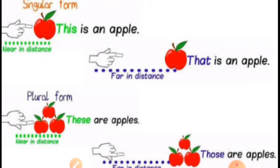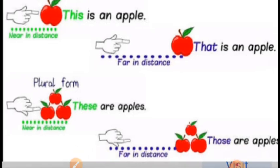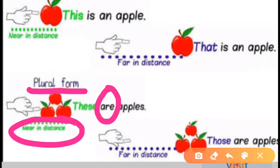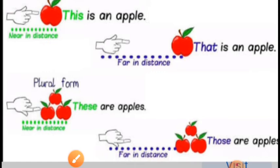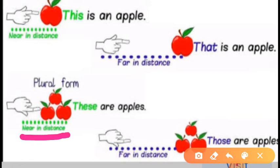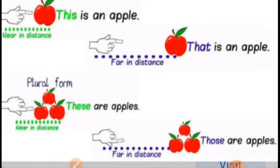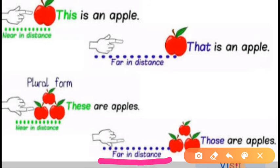'These' is used for the plural form, near in distance, and followed by 'are.' For example: these apples are near to the speaker. 'Those' is used for plural form, far in distance, and followed by 'are.' It's a very easy definition: far and distance, followed by 'are,' and more than two things — that's plural.